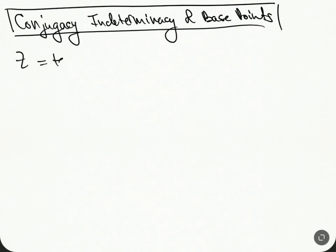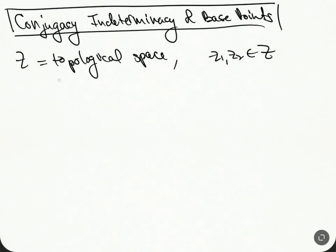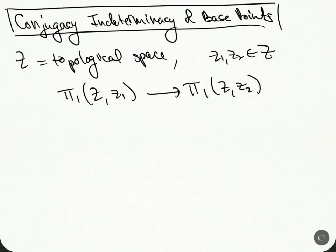Let's take Z to be a topological space, and we're going to take two points inside Z: Z1 and Z2. I want to explain where these morphisms come from. After we do it with the usual topological fundamental groups, I'll do it with the profinite — or étale — fundamental groups. Let me just draw the picture.